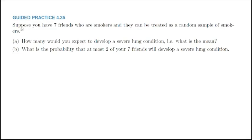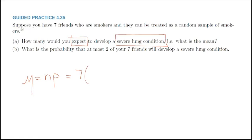Suppose you have seven friends who are smokers, treated as a random sample. How many would you expect to develop a severe lung condition — i.e., what is the mean? Mean = n × p = 7 × 0.3 = 2.1.